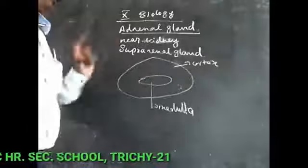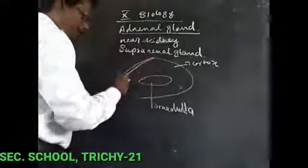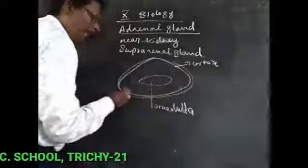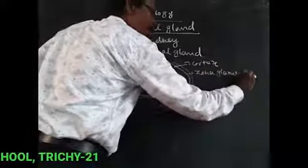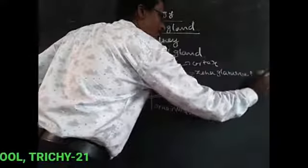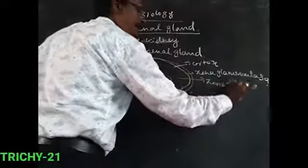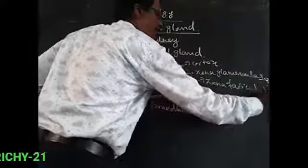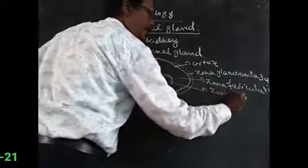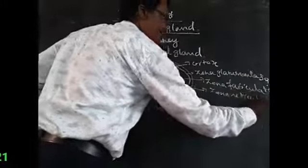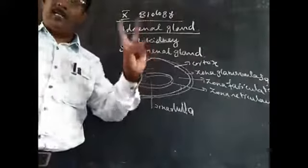The cortex is also divided into three zones. The outer zone is called zona glomerulosa, and the inner region is called zona reticularis. So there are three zones in total.